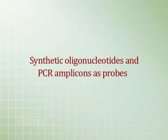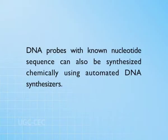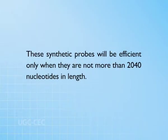In another means of generating molecular probes, synthetic oligonucleotides and PCR amplicons can also be used as probes. DNA probes with non-nucleotide sequences can also be synthesized chemically using automated DNA synthesizers. These synthetic probes will be efficient only when they are not more than 20 to 40 nucleotides in length. Probes can also be synthesized and labeled at the same time using PCR.